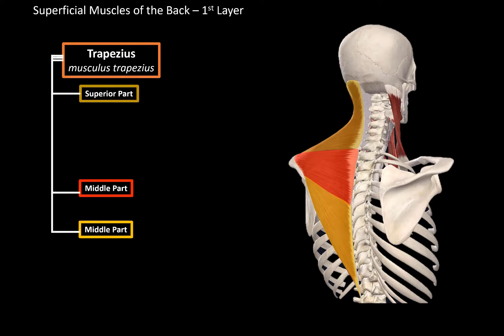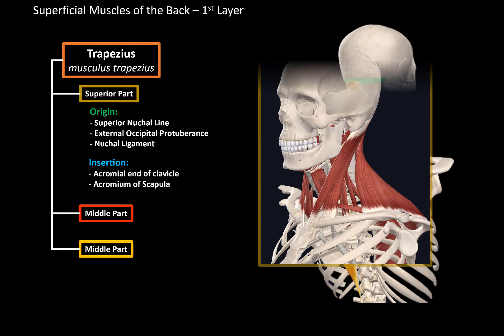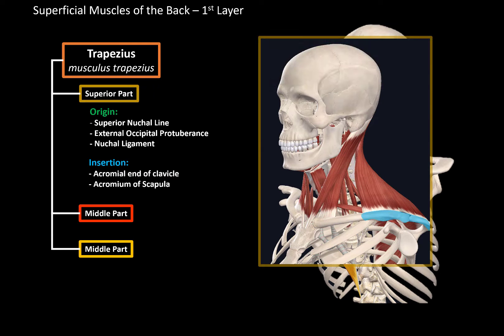The superior part will originate from the superior nuchal line, the external occipital protuberance, and the nuchal ligaments. It's then going to insert at the acromial end of the clavicle, as you see here, as well as the acromion of the scapula.